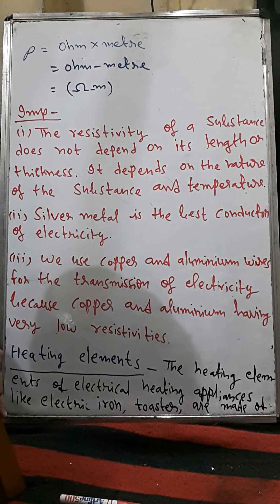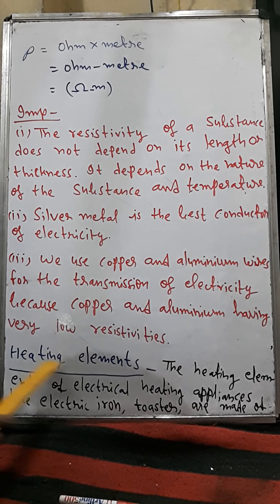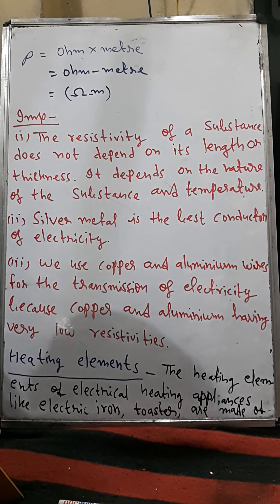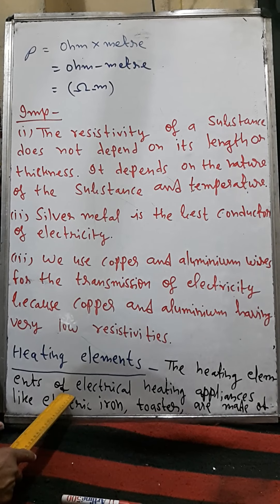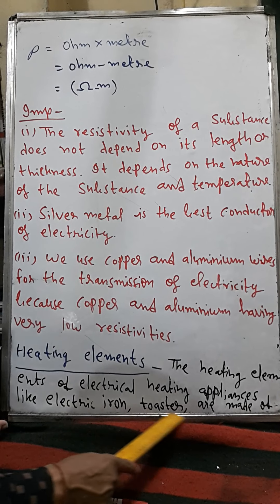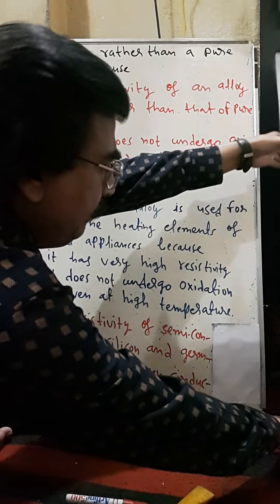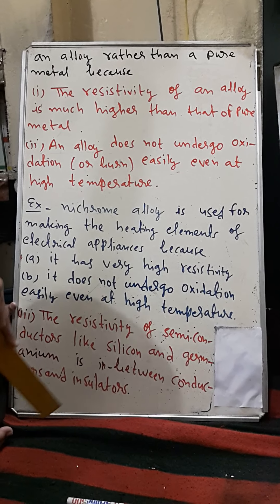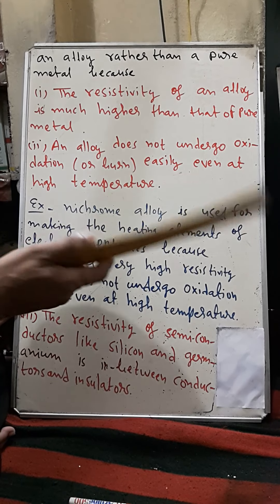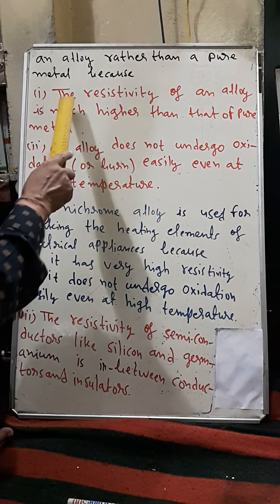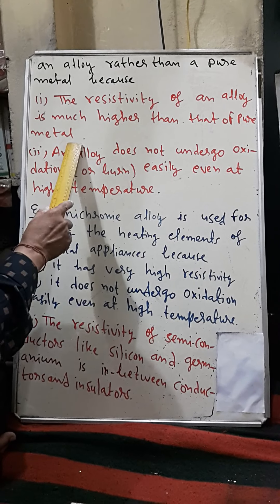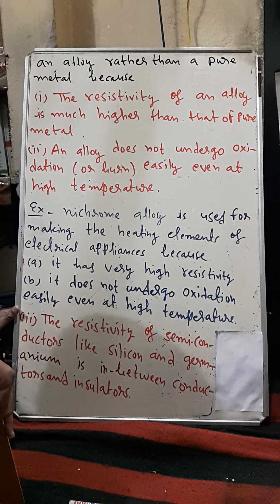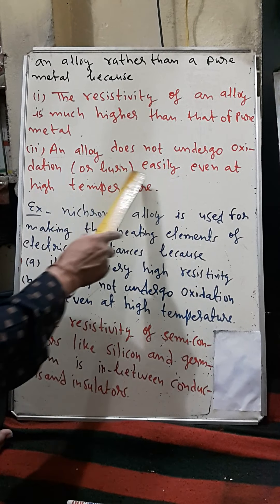Heating elements — such as those in an electric iron or toaster — use alloys instead of pure metals. The heating elements of electrical appliances like electric iron and toaster are made up of alloys. Why alloys? Because alloys are made by mixing metals and their resistivity is much higher than that of pure metals. This is the reason we use alloys in heating elements — for geysers, toasters, iron press, and so on. Also, alloys do not undergo oxidation easily even at high temperatures.